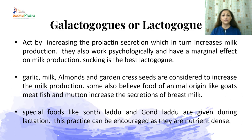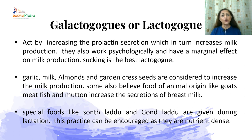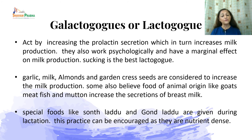Galactogogues (lactogogues) act by increasing prolactin secretion, which in turn increases milk production. They also work psychologically to have a marginal effect on milk production. Sucking is considered the best lactogogue. The diet can include certain lactogogues that stimulate milk production — garlic, milk, almonds, and garden cress seeds are considered to increase milk production. Some also believe that animal-origin foods like goat meat, fish, and mutton increase breast milk secretion. Special foods like saunt laddu or gond laddu are given during lactation and can be encouraged as they are nutrient-dense foods.